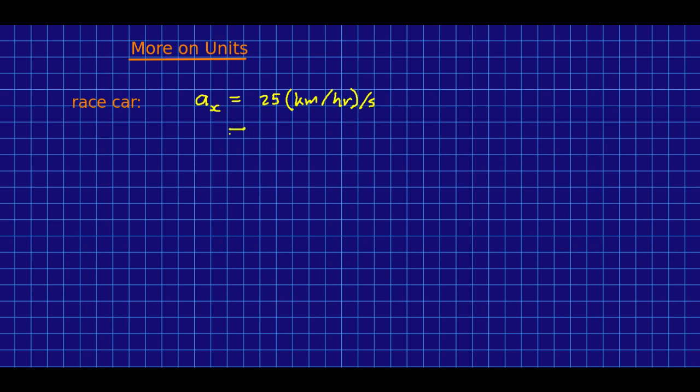Let's convert that to more useful units for physics. First, I'm going to rewrite it to make it clearer how those units are in a numerator and a denominator. Now I'm going to convert in the usual way using conversion fractions. And I get 6.9 meters per second squared, which actually for a race car is a pretty modest acceleration.